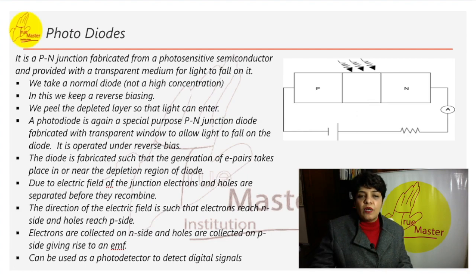The top is toned to form a window and made transparent so that light can pass through it. Steps involved: we take a normal diode, not a high concentration, just a normal P-N diode. In this we keep a reverse biasing. When the P is connected to the negative of the battery, it becomes a reverse biasing.